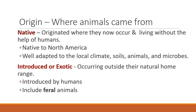Two other important terms relate to where an animal came from. Native animals originated where they now occur, living without the help of humans. In the U.S., we say something is native if it was native to North America, which indicates that animal is adapted to the local climate, soils, other animals, microbes, etc. If an animal came from some other place and was brought here, that would be called introduced or exotic. They could be introduced by humans intentionally or accidentally, and this would include feral animals.